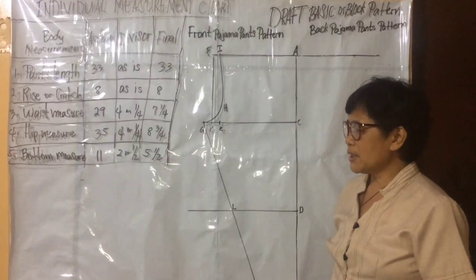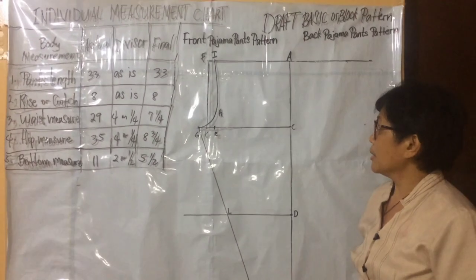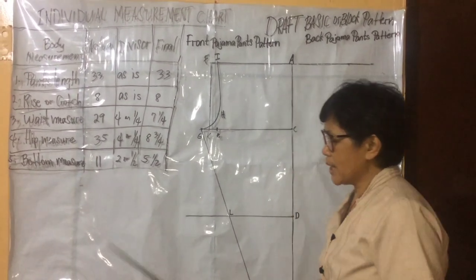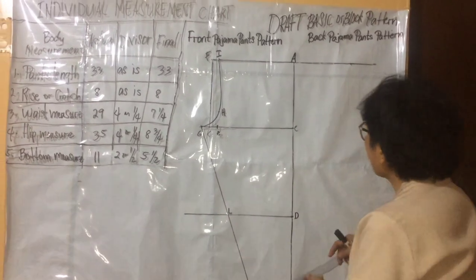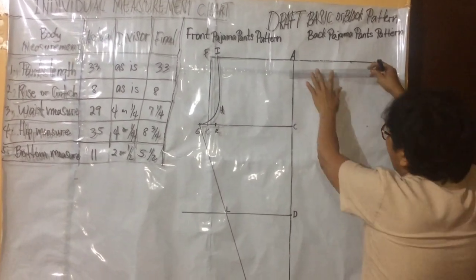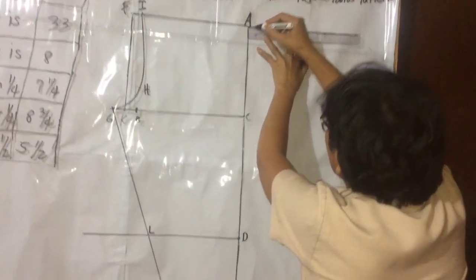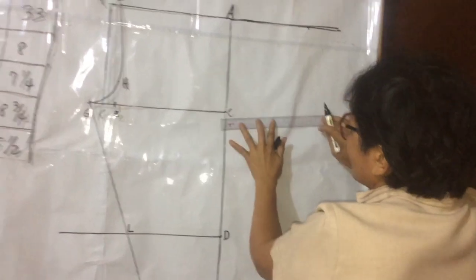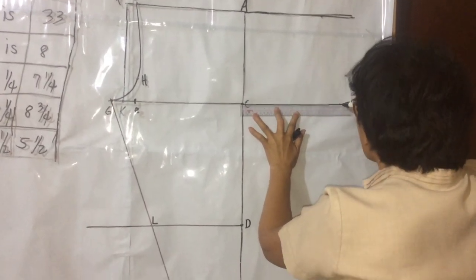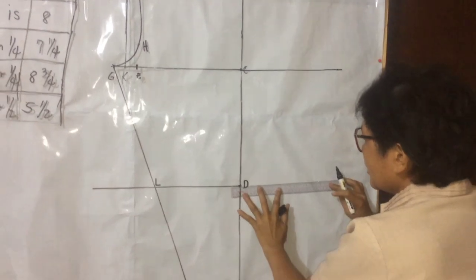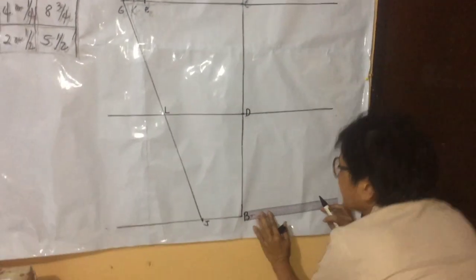After doing the front part pattern, be ready for the back part pattern. The first procedure, extend all construction lines. A, C, D, and B.